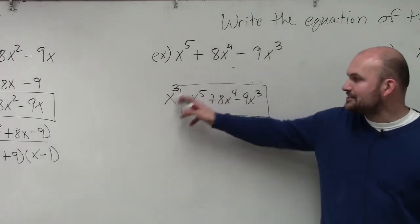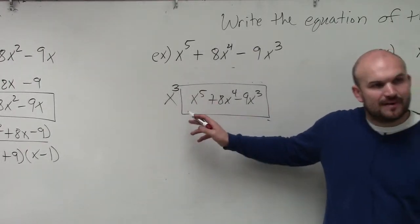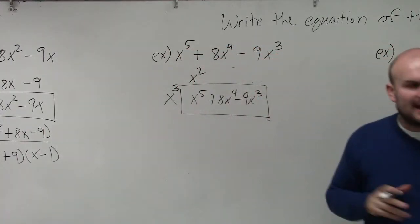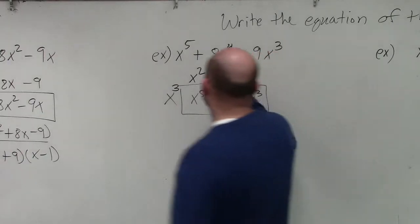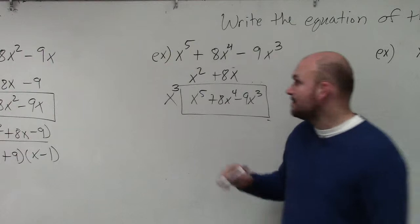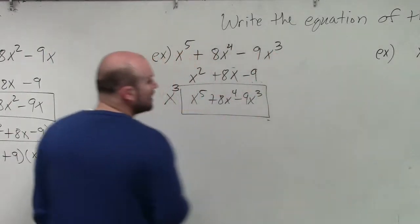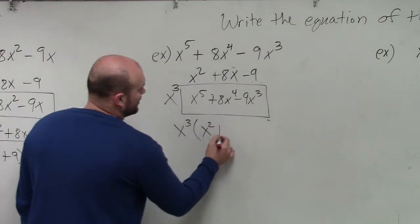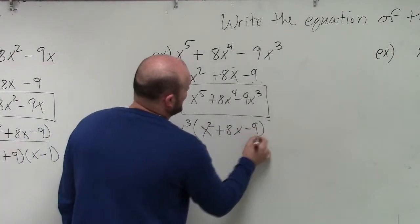So now, let's go through it. x cubed times what gives you x to the fifth power? x squared. x cubed times what gives you 8x to the fourth? 8x. And then x cubed times what gives you negative 9x cubed? Negative 9. So now, ladies and gentlemen, we have x cubed times x squared plus 8x minus 9.